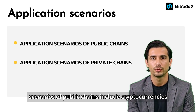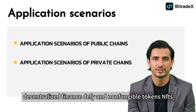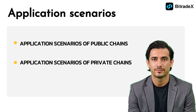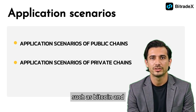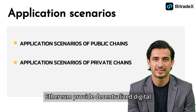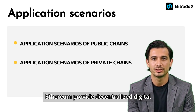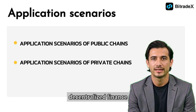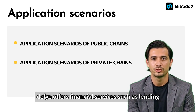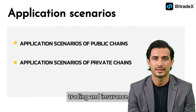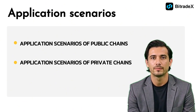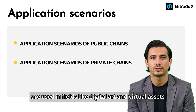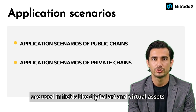The application scenarios of public chains include cryptocurrencies, decentralized finance (DeFi), and non-fungible tokens (NFTs). Cryptocurrencies such as Bitcoin and Ethereum provide decentralized digital currency transactions. Decentralized finance (DeFi) offers financial services such as lending, trading, and insurance. Non-fungible tokens (NFTs) are used in fields like digital art and virtual assets.